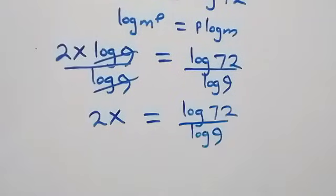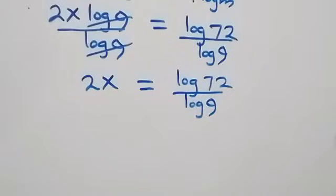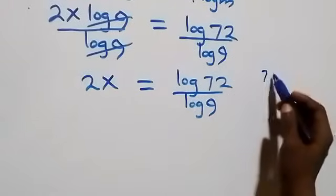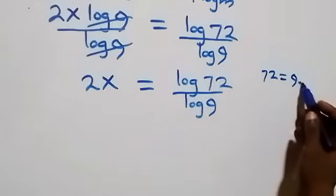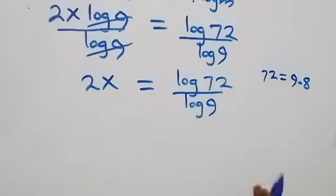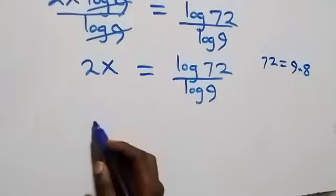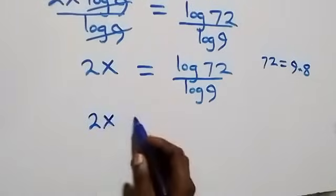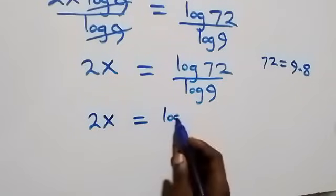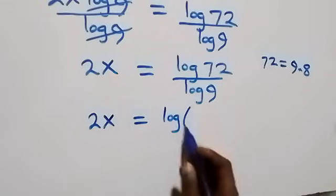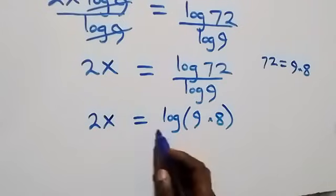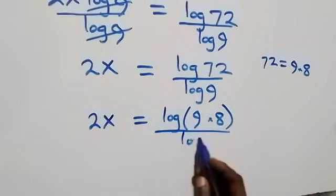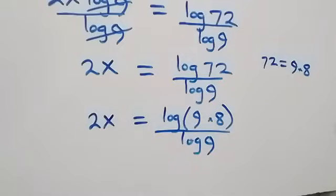From here we can express 72 as 9 times 8. So we have 2x equals log of 9 times 8, over log 9.